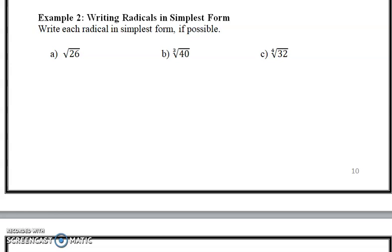Hello everybody, welcome back. Today we're going to look at example 2, Writing Radicals in Simplest Form. This is a continuation of section 4, decimal 3.